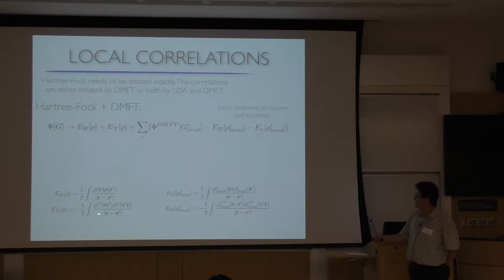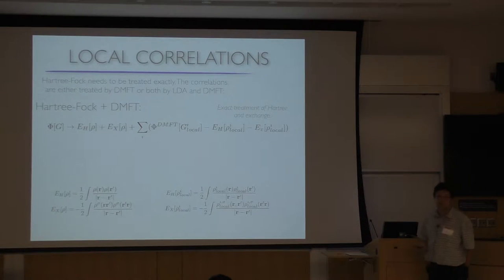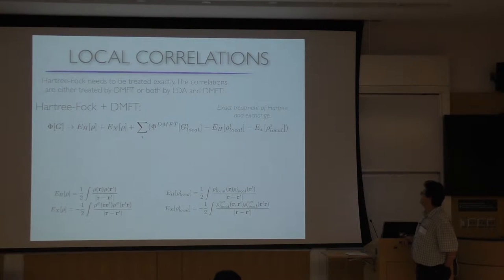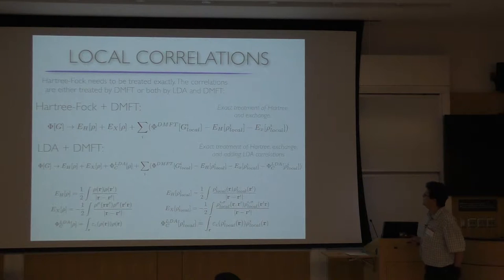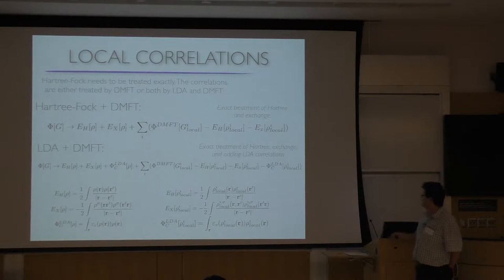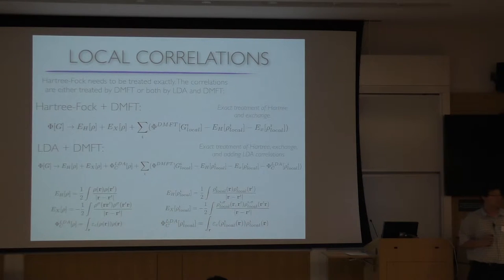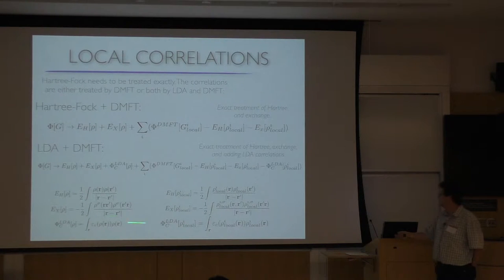The exact exchange has a similar form to Hartree but with the off-diagonal density matrix. The exchange in DMFT has an analogous form — all the terms look just like the exact functional except that all densities and Green's functions are replaced by their local counterparts. We can also do LDA+DMFT, adding LDA correlations and subtracting the local correlations — the DMFT approximation for the LDA functional — and that has to be subtracted.